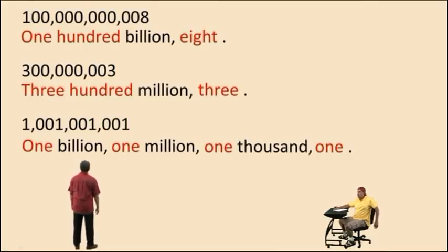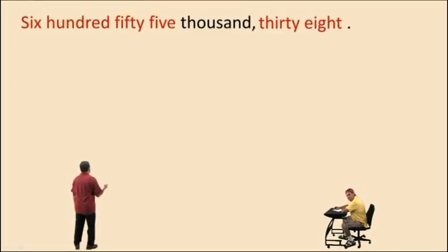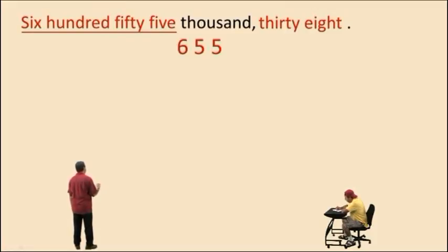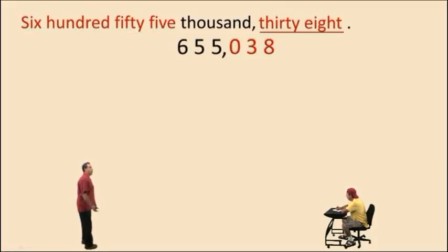All right, Charlie, now, here's a number written as a word statement. Let's write the number using digits. So here we go, six hundred, fifty-five thousand, thirty-eight. Notice we put the zero in the hundreds place because we need to have three digits in each period, and we didn't have any hundreds, so I put the zero there.